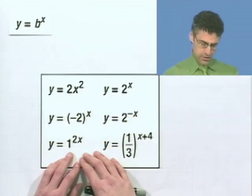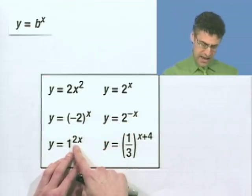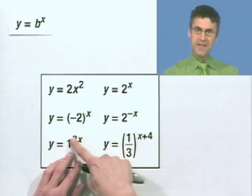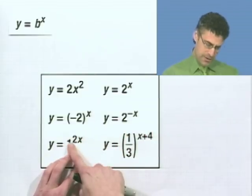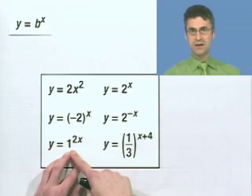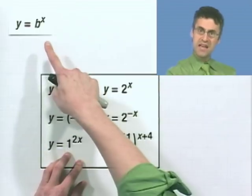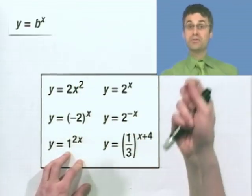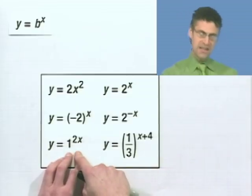What about this one? y equals 1 to the 2x power. Again, I'm loving the fact that there's a variable in the exponent. In this case, it's 2x. That's fine. The problem is we just have a 1 here. And remember that the base has to be a positive number that's different from 1. So, in fact, this is not an exponential function.